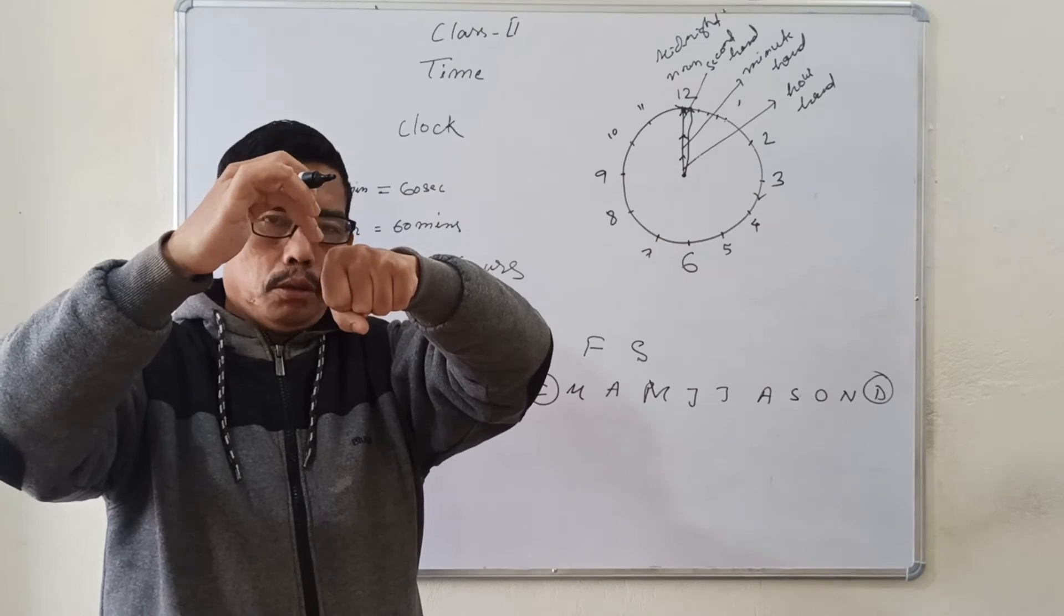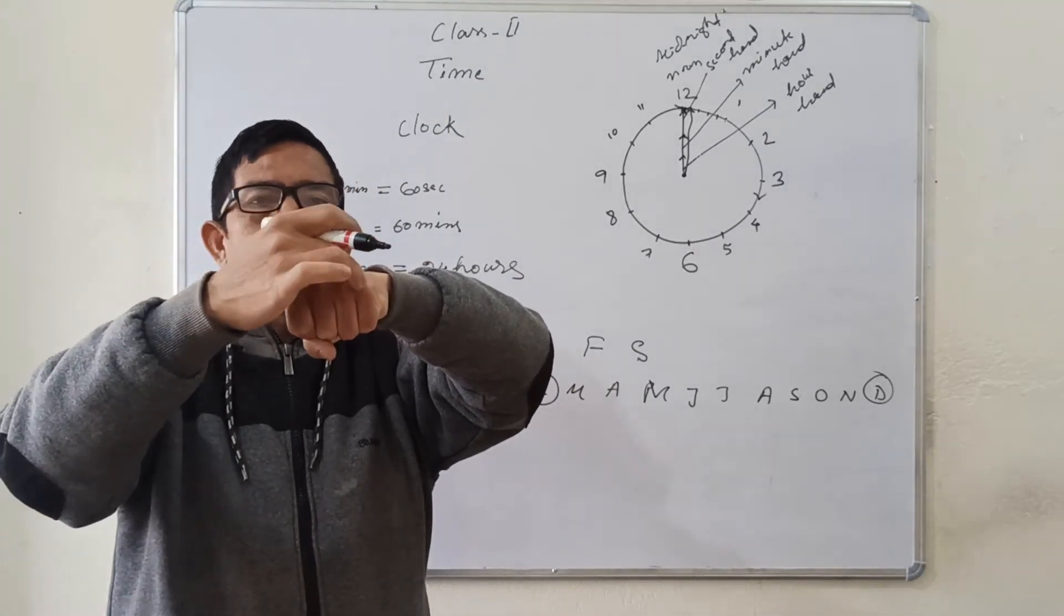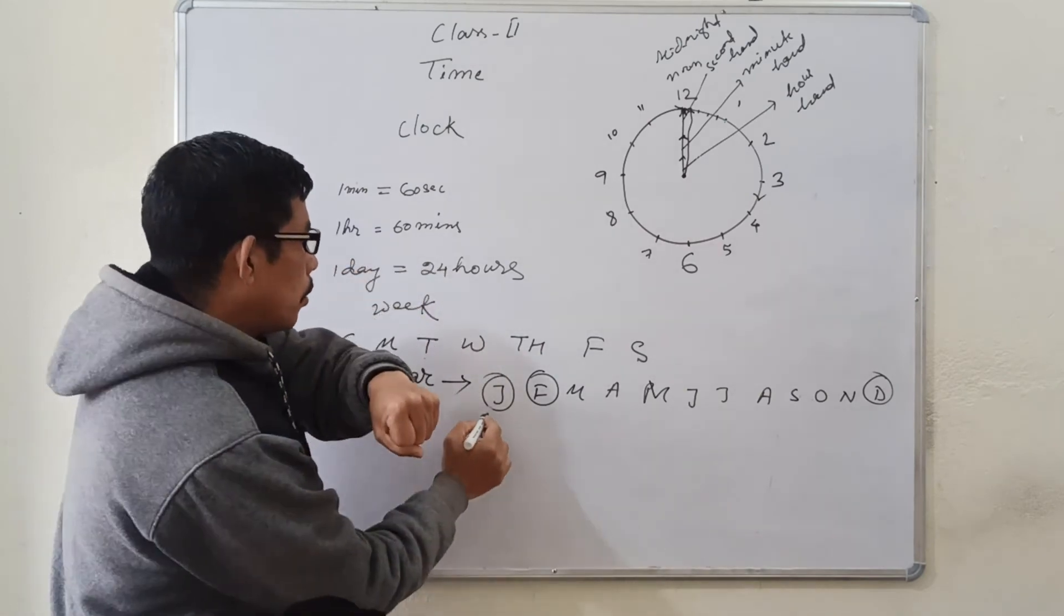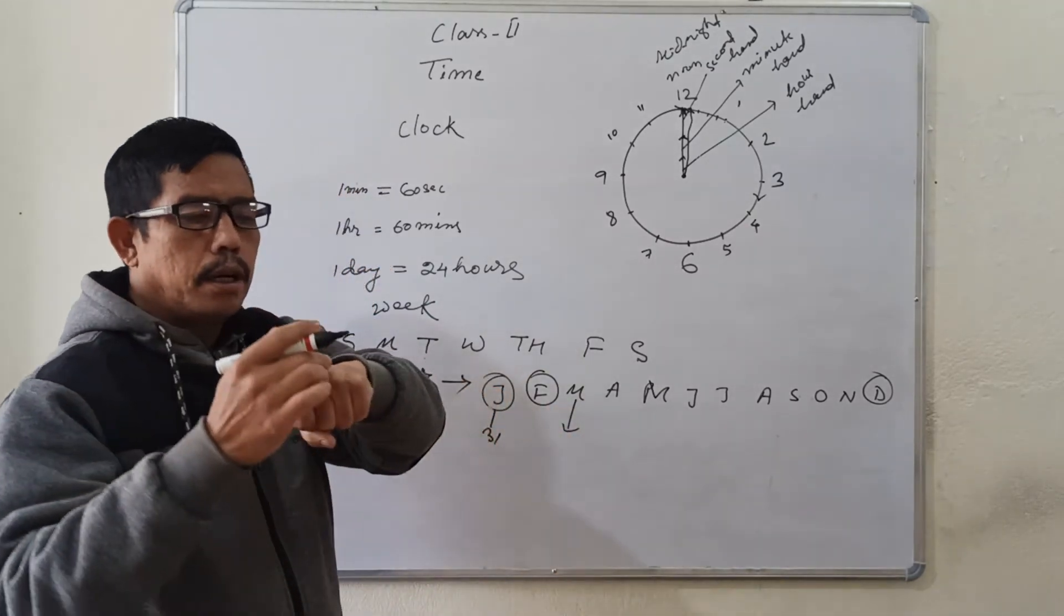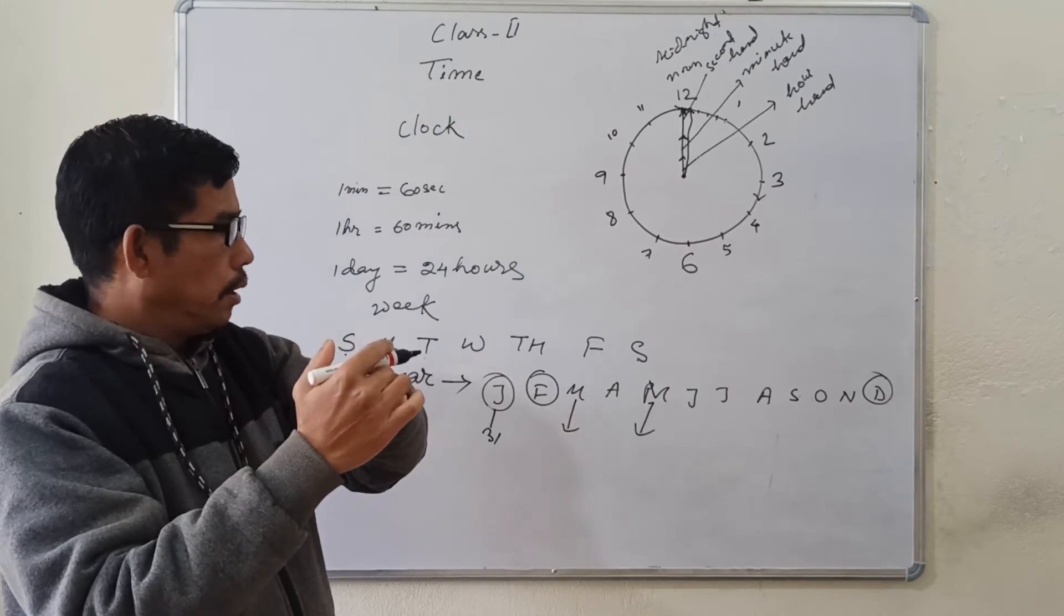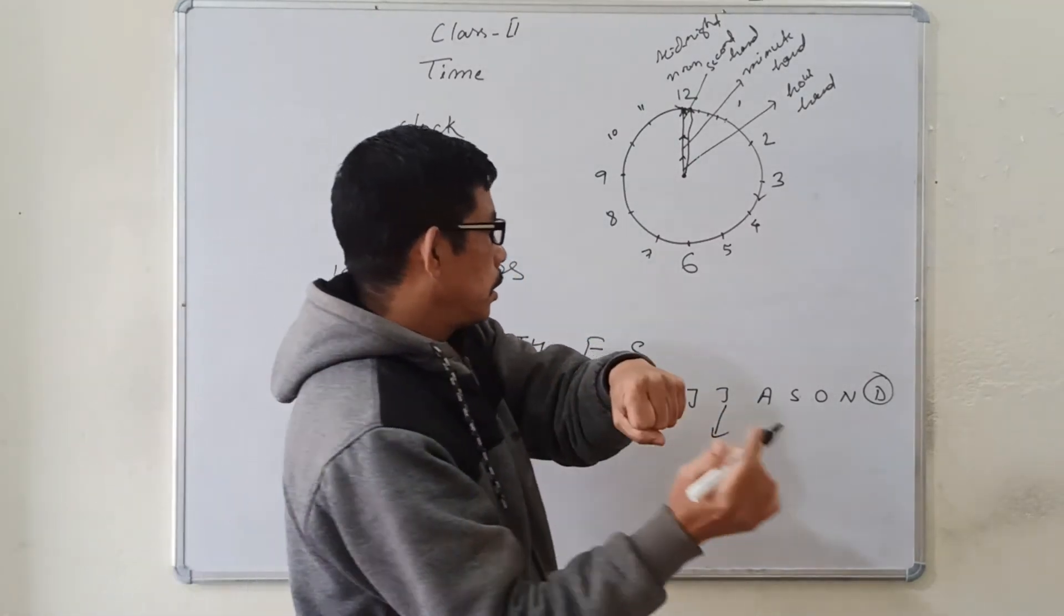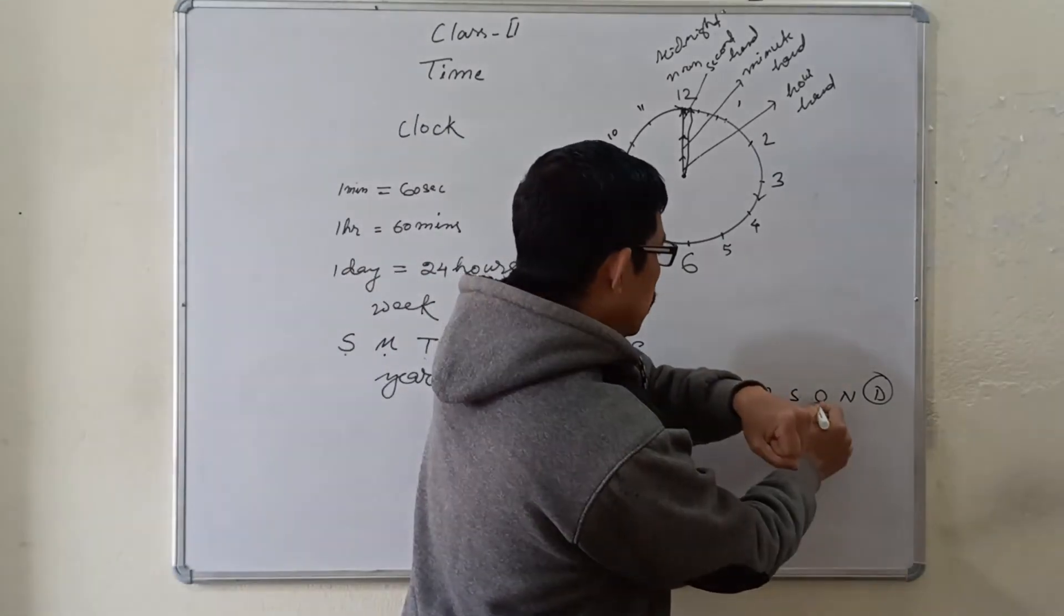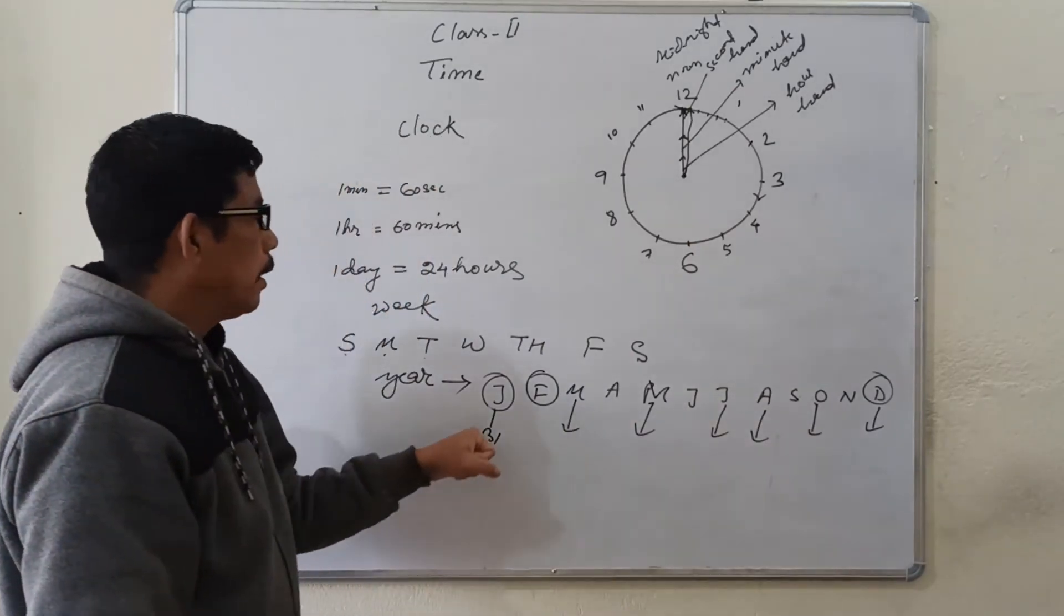Then, from this, those months which fall on this pointed one, this will have 31 days. And, others will have 30 or 28 or 29. Let's find out. This is January. So, January will have 31. February, March, March will have 31. April, May, May will have 31. June, July, July 31. Then, August, 31. September, October, November, December. So, these months will have 31 days.